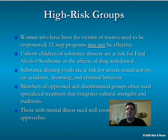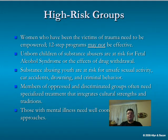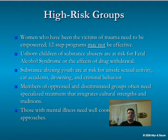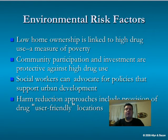Youth who abuse substances are at risk for unsafe sexual activity, car accidents, drowning, or criminal behavior. Members of oppressed and discriminated groups often need specialized treatment that integrates cultural strengths and traditions — those groups may have higher risks due to cultural issues, or may have cultural strengths that help them obtain and maintain sobriety. Those with mental illness need well-coordinated treatment approaches, which is where the social worker plays a key role in the multidisciplinary team.